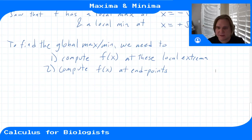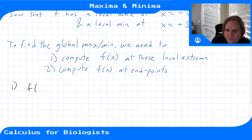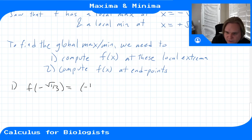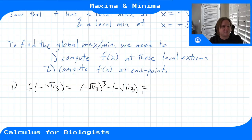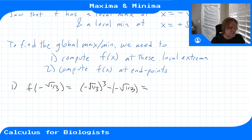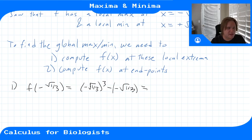For step one: f(-√(1/3)) = (-√(1/3))³ - (-√(1/3)). Plugging that in, I get approximately 0.385.